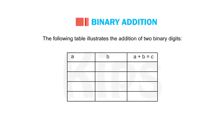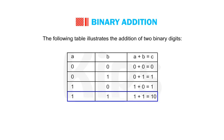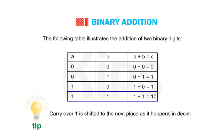The following table illustrates the addition of two binary digits: 0 + 0 = 0; 0 + 1 = 1; 1 + 0 = 1; and 1 + 1 = 10. Note that the carry of 1 is shifted to the next place, just as it happens in decimal number addition.